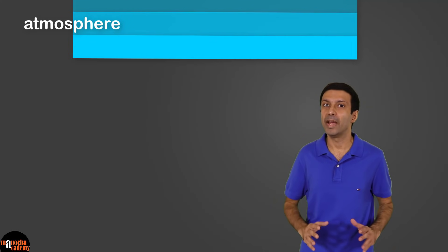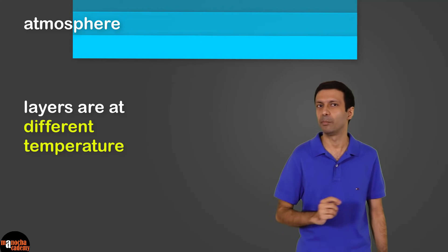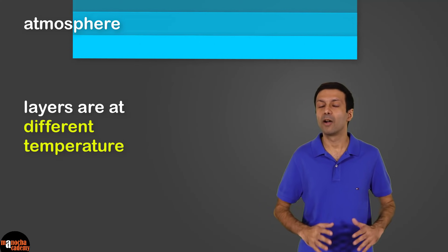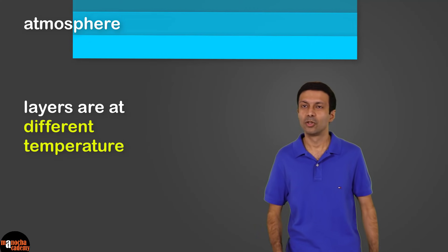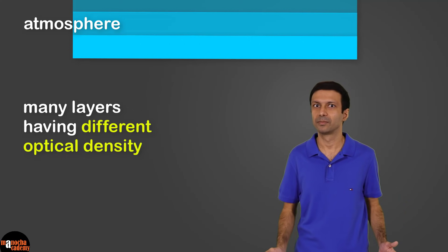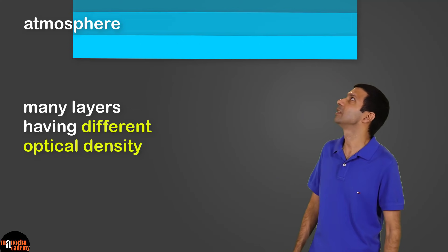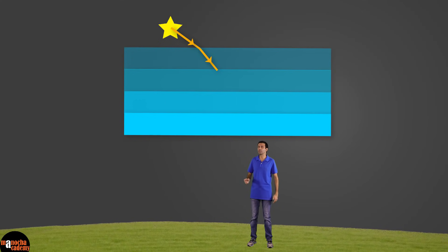Similarly, we can explain the twinkling of stars. The atmosphere is made up of many many layers at different temperatures. The cooler layers are more dense compared to the warm layers, so the atmosphere is made up of many layers having different optical density. When we look up at the stars, light coming from the star enters the atmosphere and undergoes refraction because light is going from vacuum into the atmosphere.